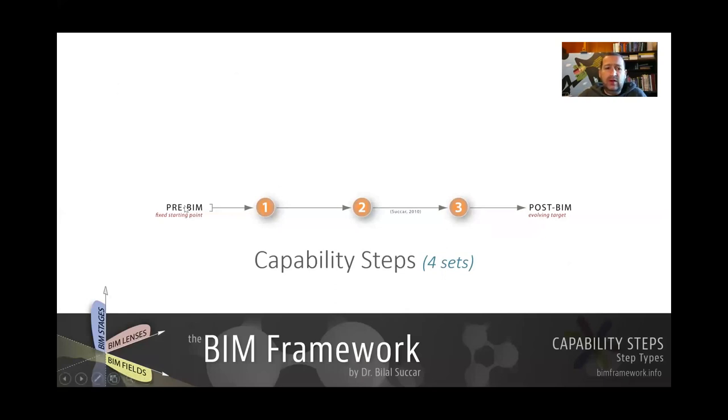So it is separated into smaller steps. These sets go from pre-BIM to stage one, from one to two, from two to three, from three to post-BIM. They are combined in something called sets. Meaning from pre-BIM to one, there's an A set. From one to two, there is a B set. From two to three, there is a C set. And from three to post-BIM, there is a D set.